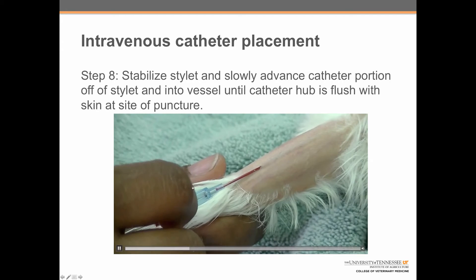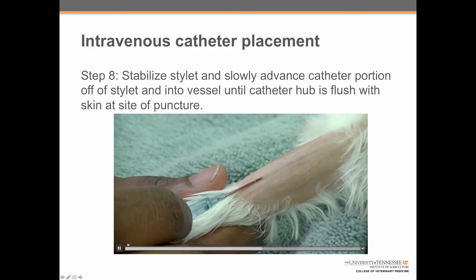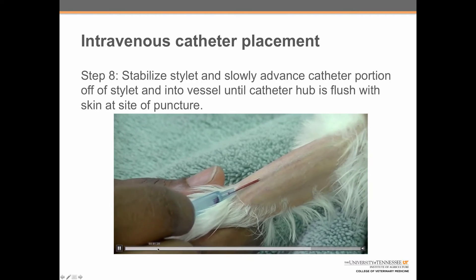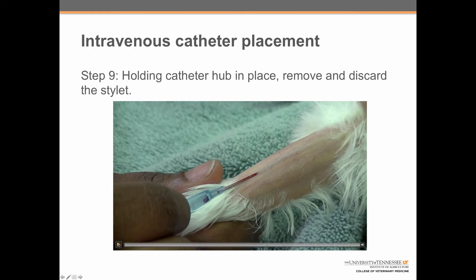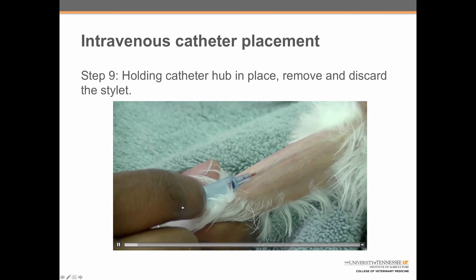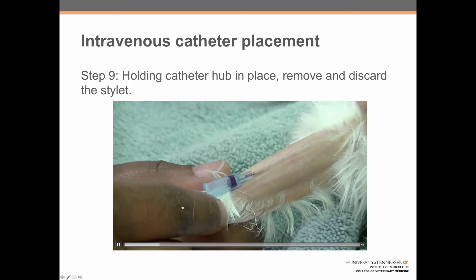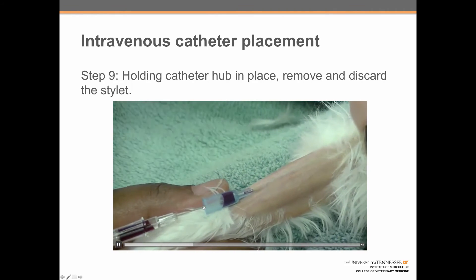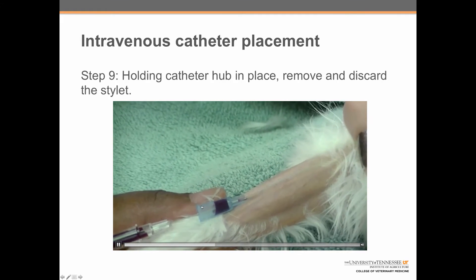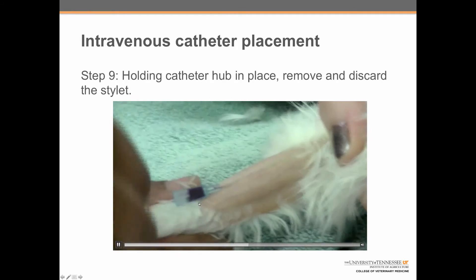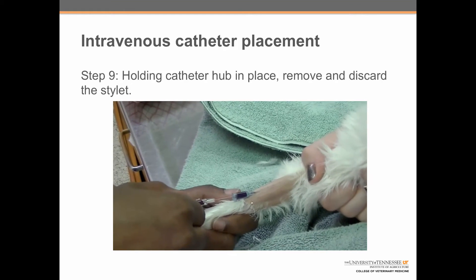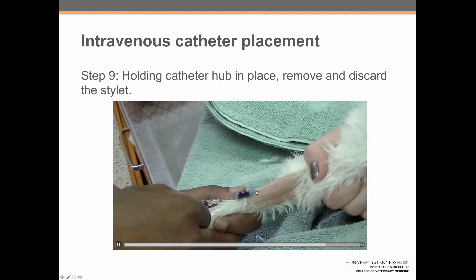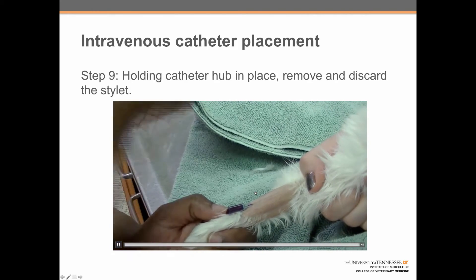At that point she stabilizes the stylet and slowly advances the catheter portion off of the stylet and into the vessel until the hub is flush with the skin at the site of puncture. She does this with the tip of her index finger while the rest of her hand holds the catheter unit stable. Holding the rest of the stylet stabilized with her thumb and ring finger, she uses her index finger to advance the catheter until the hub is flush with the skin, then gently removes the stylet and discards it, using her thumb to keep the catheter stable so it does not come out.